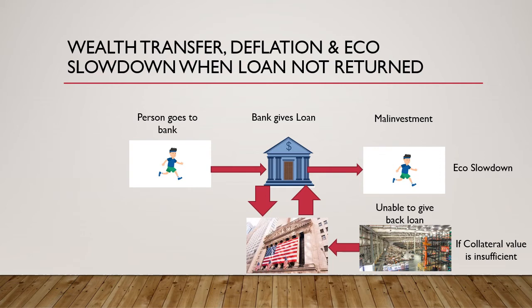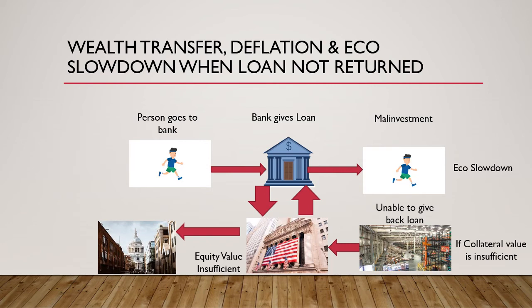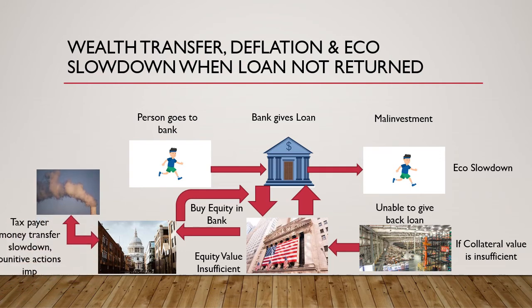In the third scenario, even the equity value of the bank is not sufficient to cover its losses. In this case, the federal government has to step in and buy equity into the banks. They would use taxpayers' money to do that — buying equity into the banks — and as wealth is shifted from the taxpayers, this will lead to lower demand in the economy and hence a lower economic slowdown.